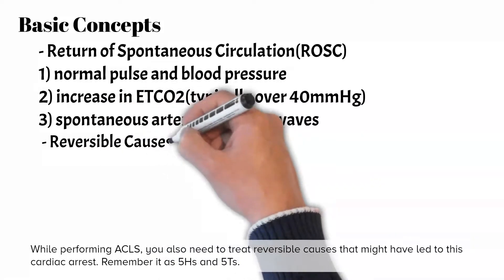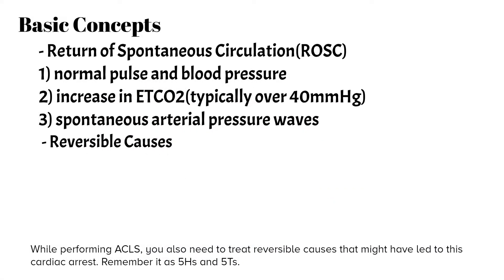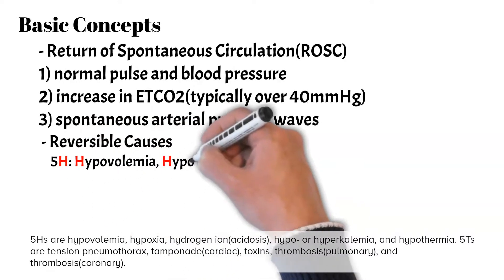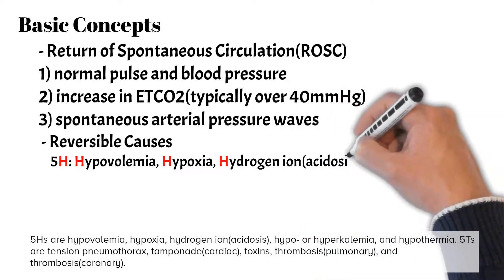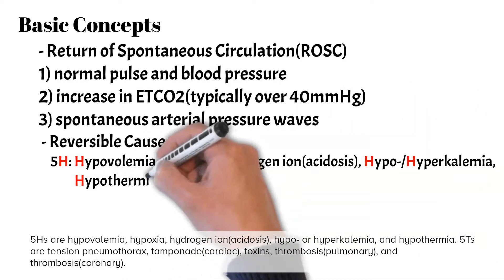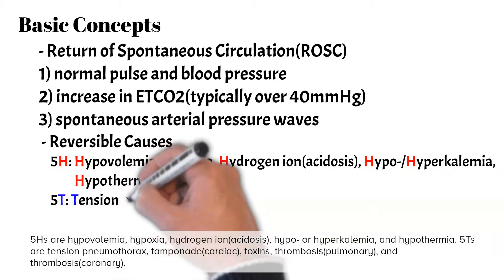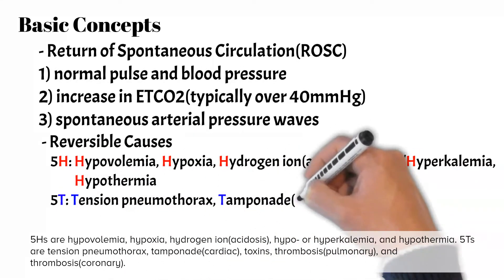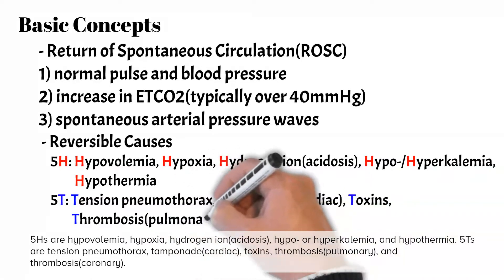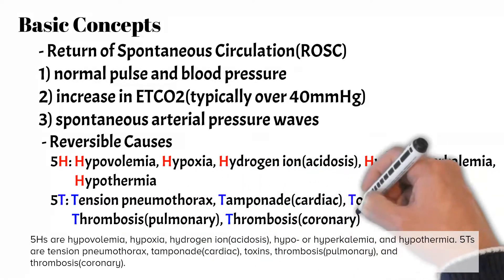While performing ACLS, you also need to treat reversible causes that might have led to the cardiac arrest — remember the 5H's and 5T's. The 5H's are: hypovolemia, hypoxia, hydrogen ion acidosis, hypo- or hyperkalemia, and hypothermia. The 5T's are: tension pneumothorax, tamponade cardiac, toxins, thrombosis pulmonary, and thrombosis coronary.